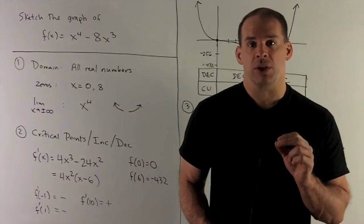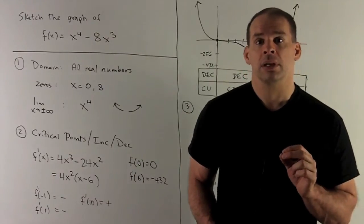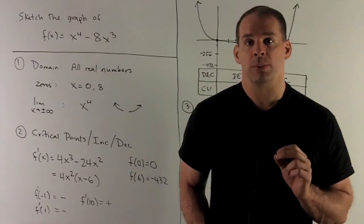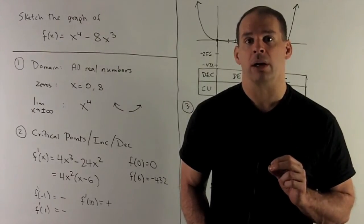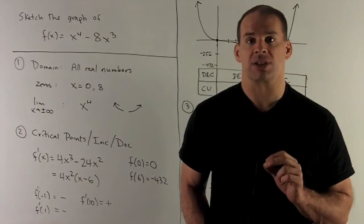Now, that's as much as we can do without taking a derivative, so let's do that. Our derivative is going to be f'(x) = 4x^3 - 24x^2. I can factor 4x^2 out of that, and I'll be left with x - 6.